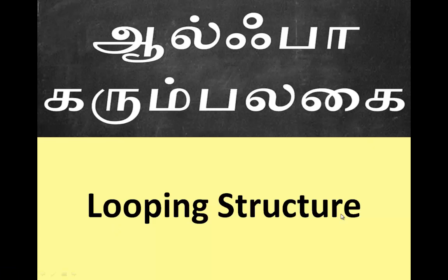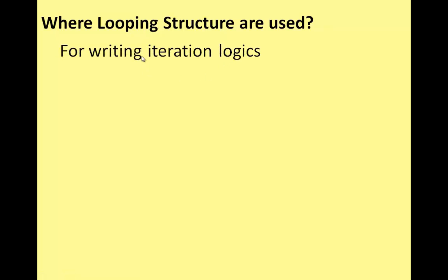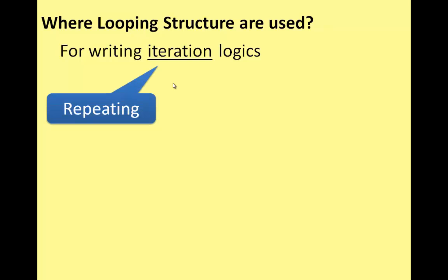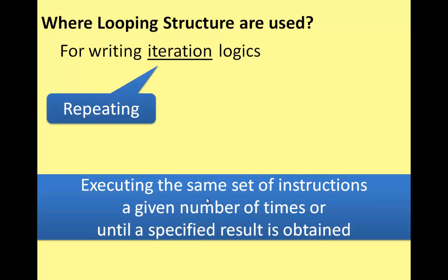Looping structure. Iteration logic — how to use it. Iteration is repeating. A looping structure executes the same set of instructions a given number of times, until a specific result is achieved or one condition is met.